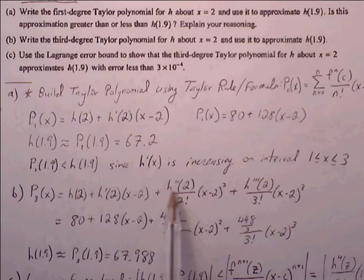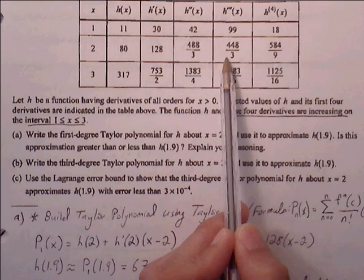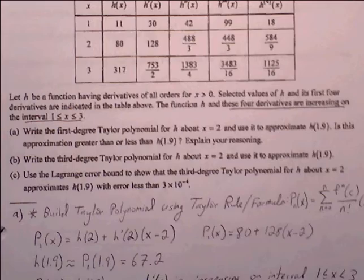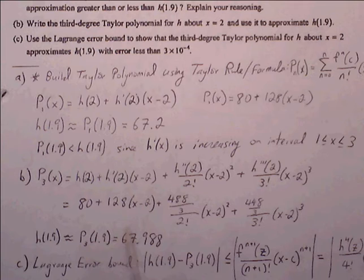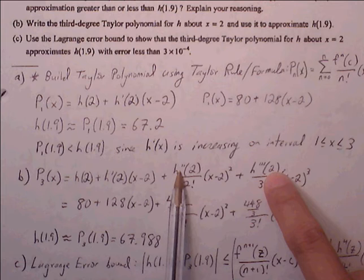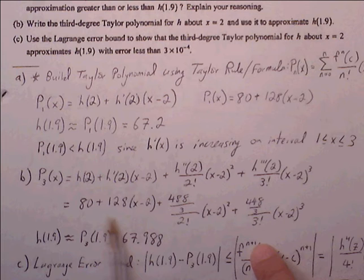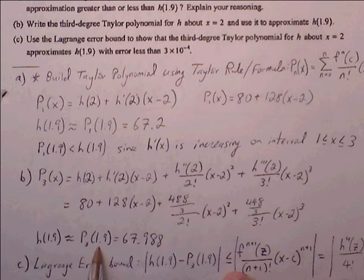Replace h double prime of 2 with 488 over 3, and the third derivative evaluated at 2 with 448 over 3. After substituting these values and simplifying, we arrive at the third degree Taylor polynomial. Plugging in x equals 1.9 and cleaning up gives an approximation of 67.988.